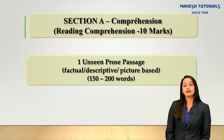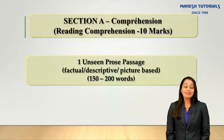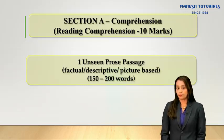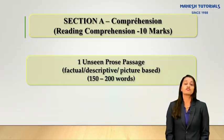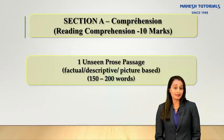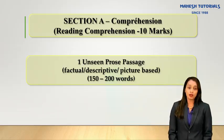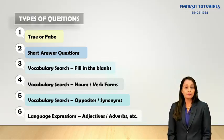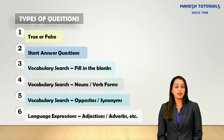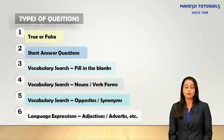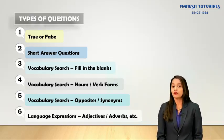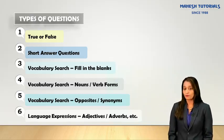Section A is reading comprehension. An unseen passage will be given to you — it can be factual, descriptive, or picture based. For the past few years, it has generally been a picture based comprehension, consisting of 150 to 200 words. The types of questions asked include true or false, short answer questions of 2 marks each, vocabulary based questions like fill in the blank, noun form, verb form, opposites or synonyms, and finding adjectives or adverbs from the passage.